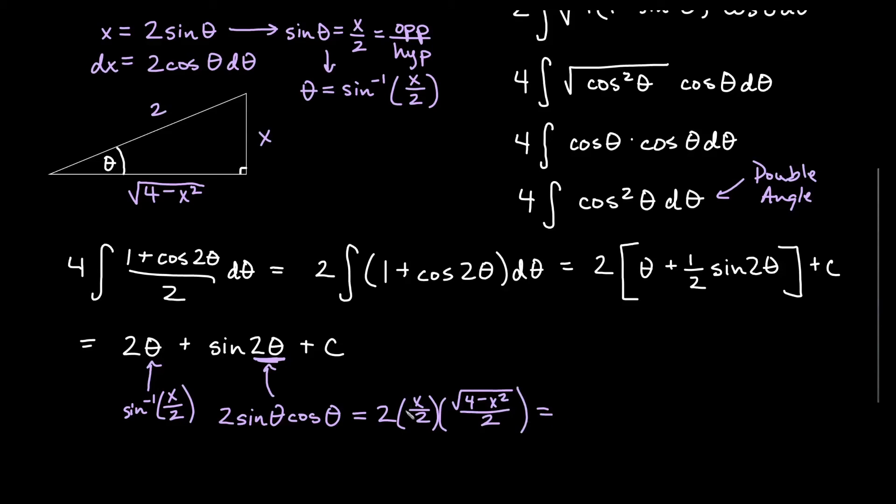And then if I reduce one of the 2s on the bottom with the 2 out front, that would give me x times this root all over 2.